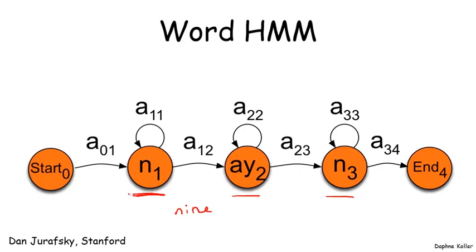And so there is a self-transition loop because you can stay in the same phone for more than one time unit. And then eventually you transition to the next phone and the next phone. And this is a typical HMM for a word.